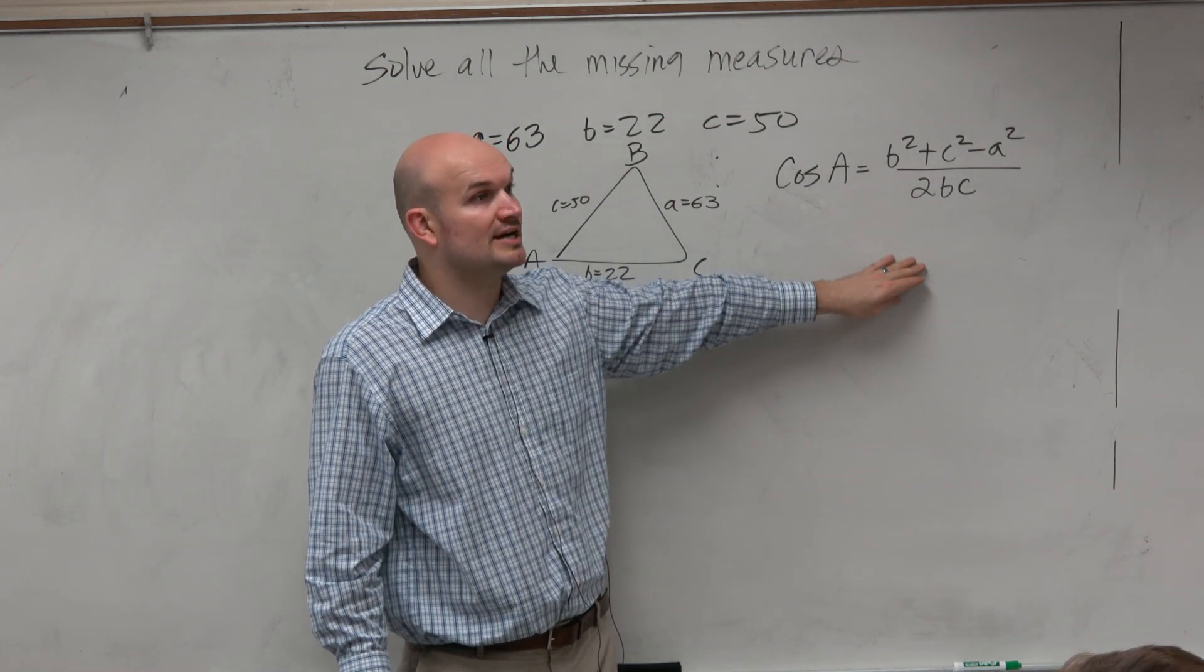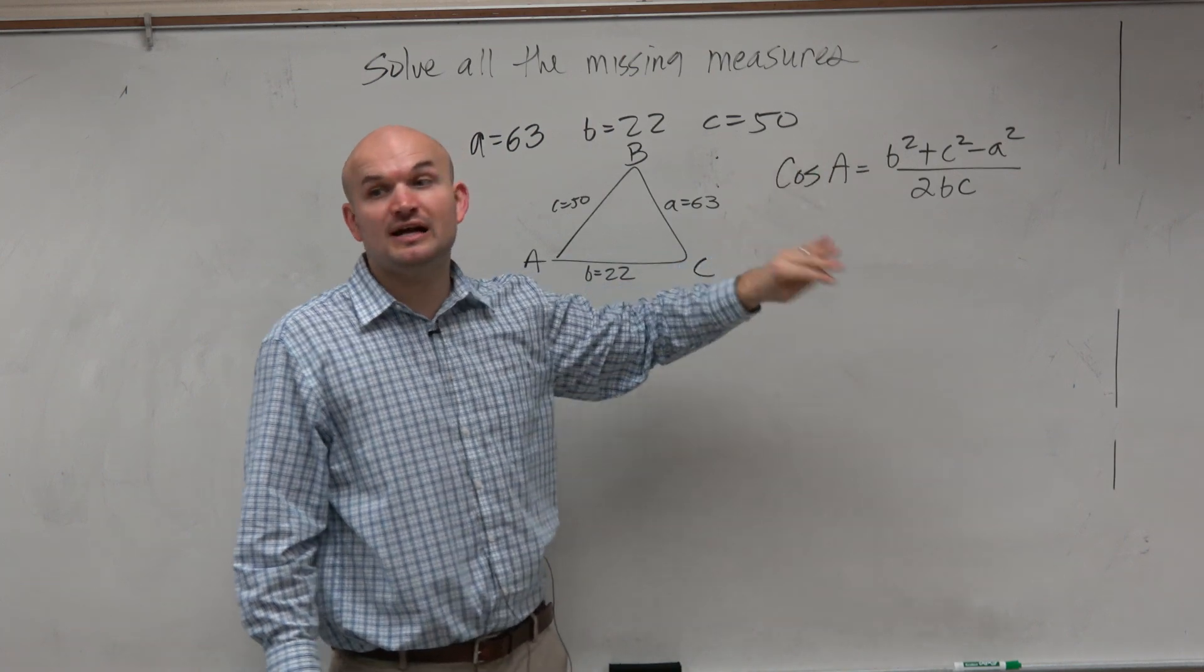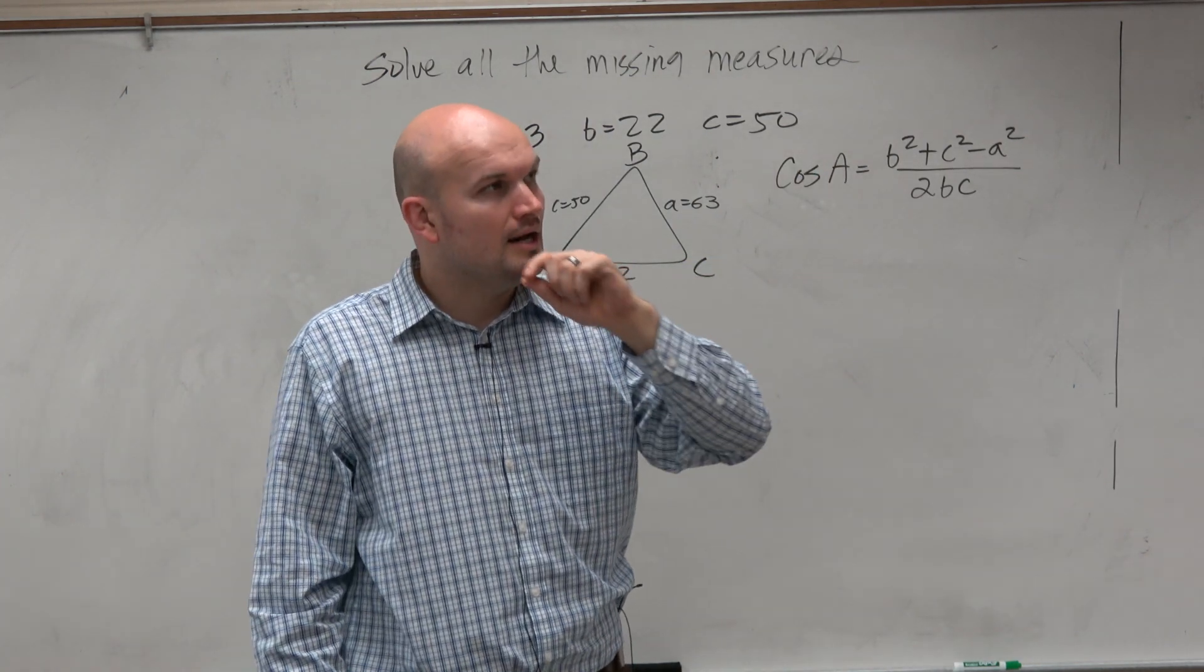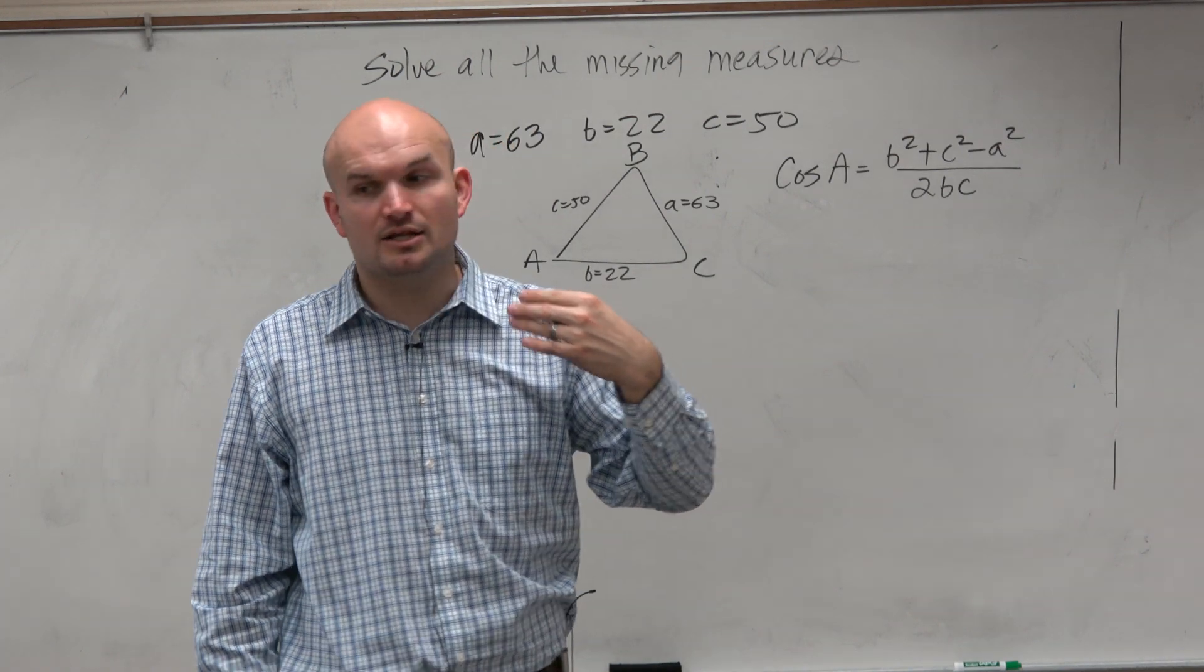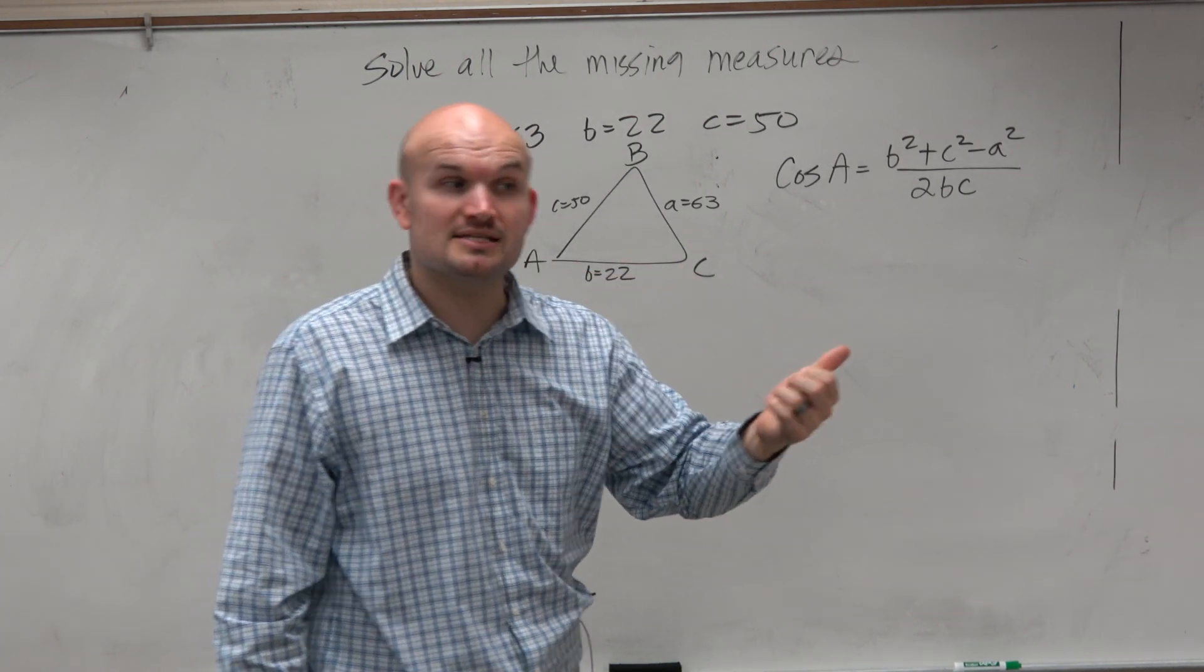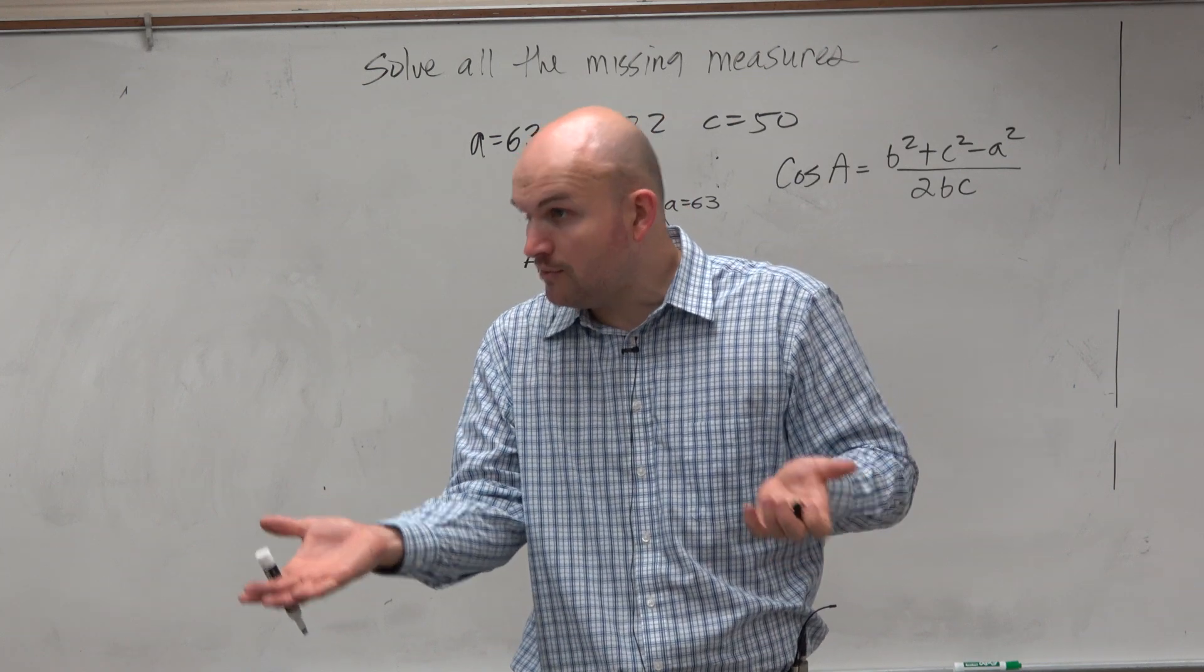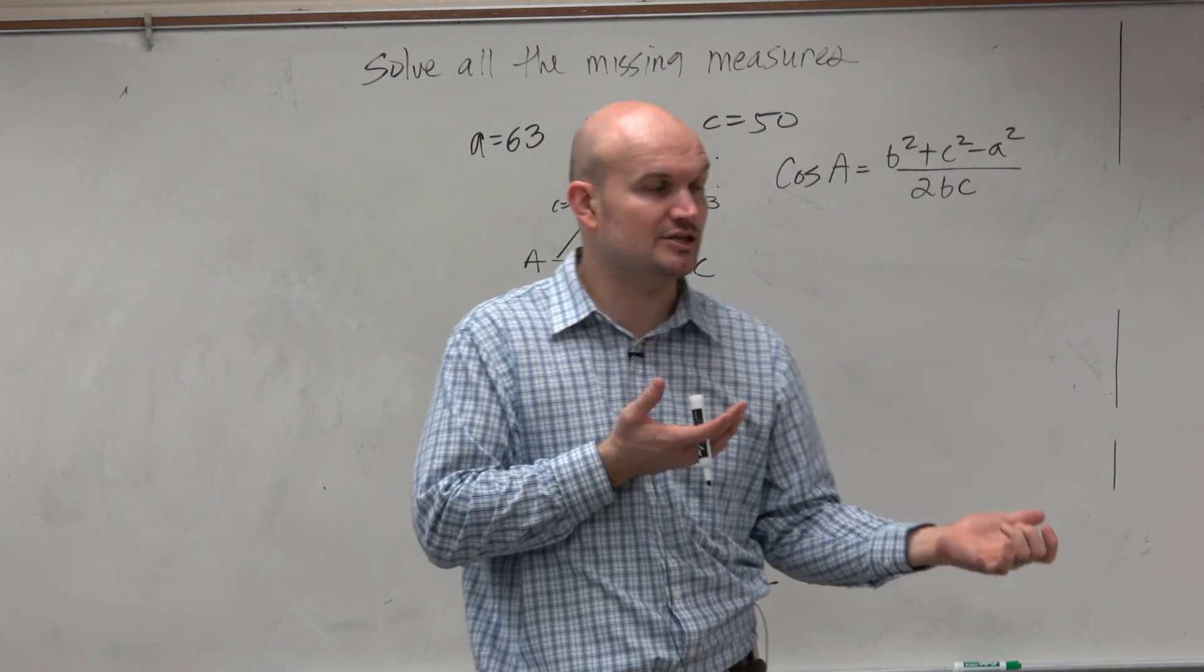So if your goal is to only use the Law of Cosines, then use the Law of Cosines twice for each angle. So you could do that for A, and then you're going to have to do it for another angle. Or if your goal is to use the Law of Sines, because you like the Law of Sines a little bit better than the Law of Cosines, which maybe at this point you don't know. But once we start doing some problems, you guys can determine that.